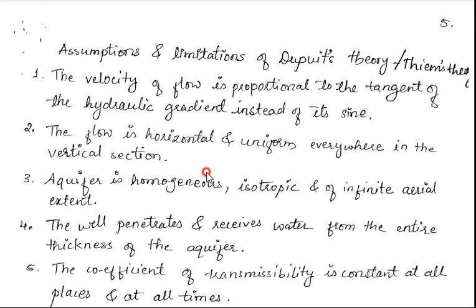In the previous class we discussed Deppit's theory. Now we will discuss the assumptions and limitations of that theory. We derived an equation for an unconfined aquifer, so let us discuss the assumptions made while deriving the equation. The first assumption is that the velocity of flow is proportional to the tangent of the hydraulic gradient instead of its sine.